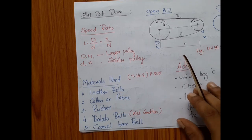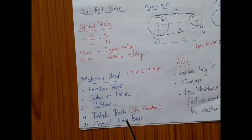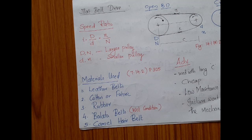The belata belt may not be that familiar to you. This belata belt is similar to a rubber belt, but they use belata gum for fabricating it. They are generally free from alkalis, free from attack by acids, and also free from oils — meaning they can be used in wet conditions.